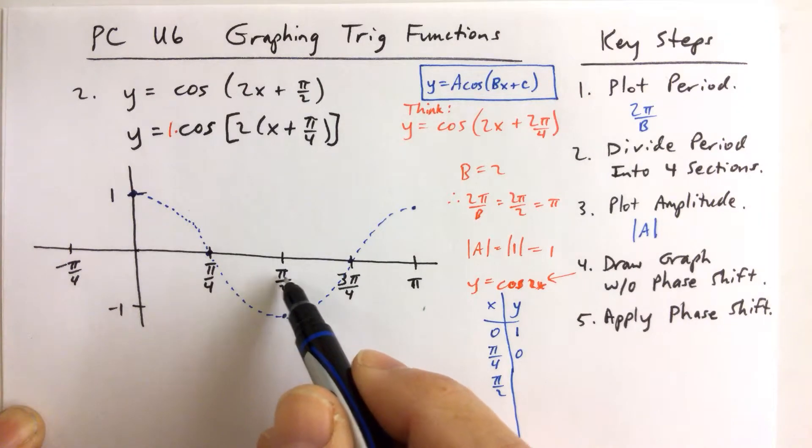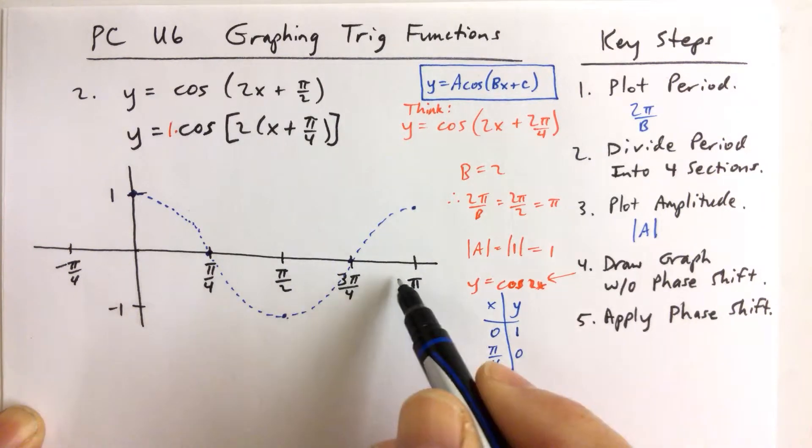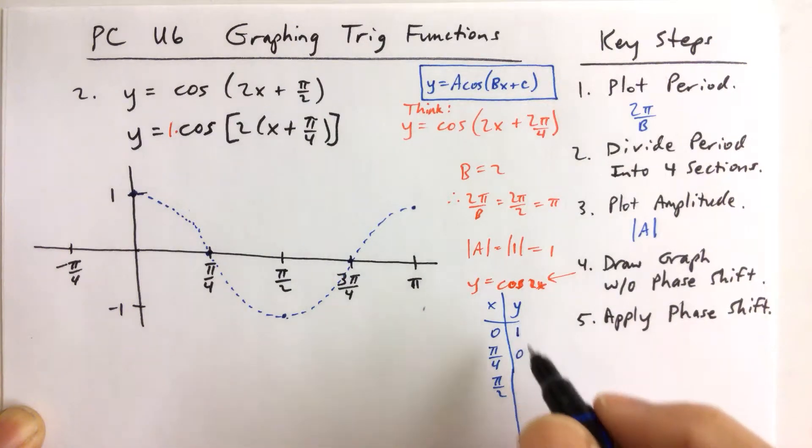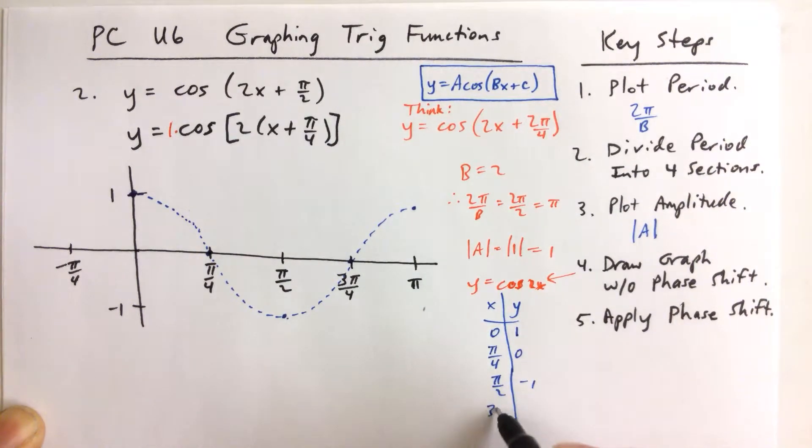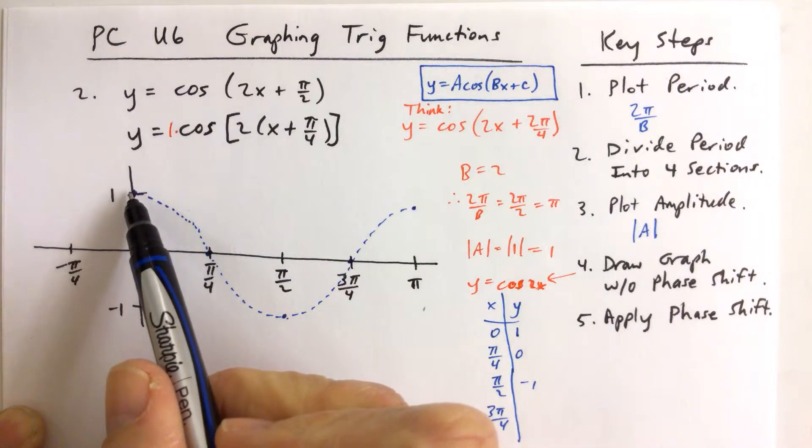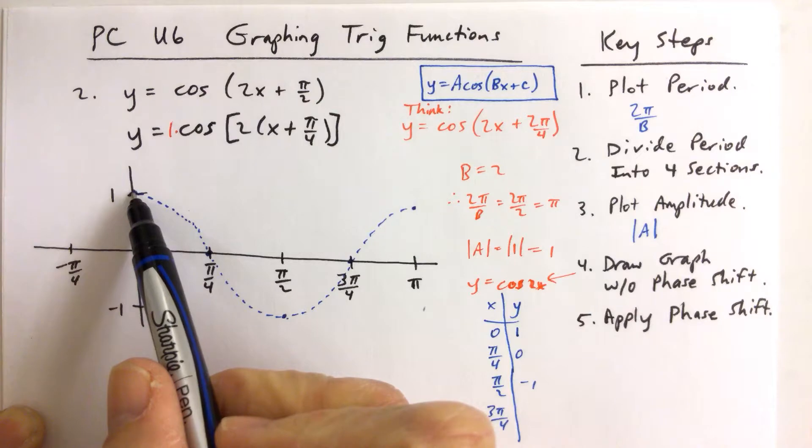And if you continue to plot these points, continue to plug in the successive values along the x axis for x. Plug in pi over 2, you get negative 1. Plug in 3 pi over 4, I'll let you do that if you want to confirm.